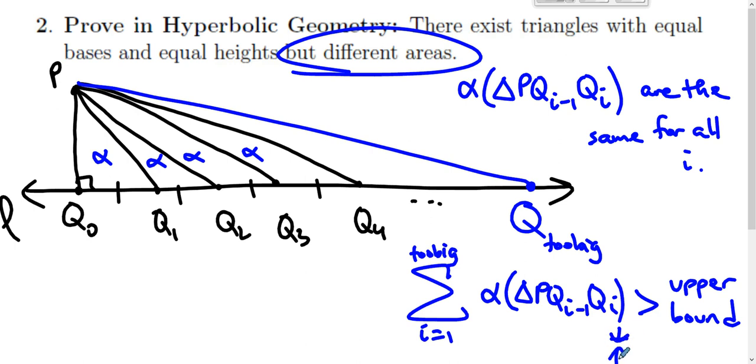So where did we go wrong? We went wrong when we assumed that the areas were the same for all i. And if the areas are not the same for all i, then there have to exist triangles with equal bases and equal heights but different areas. And that's the idea behind the proof.